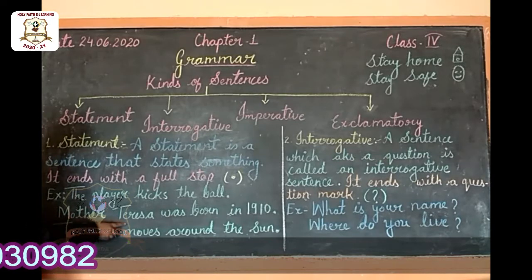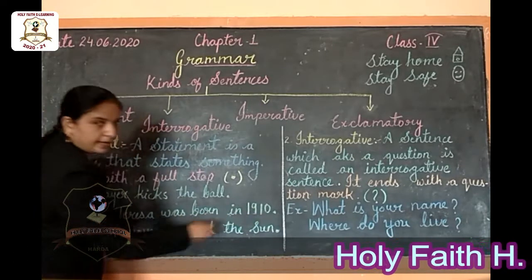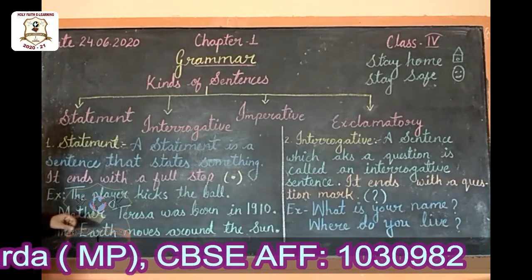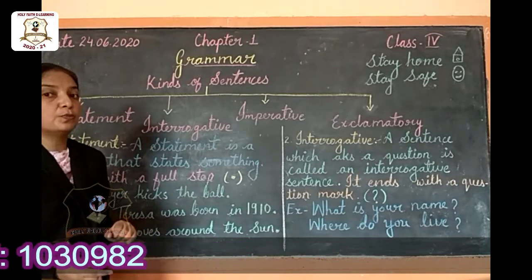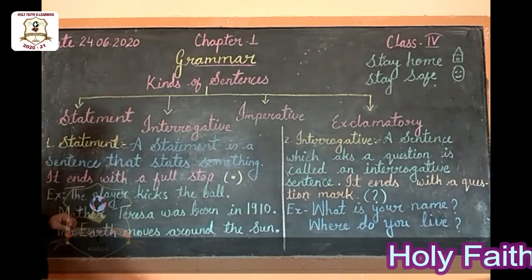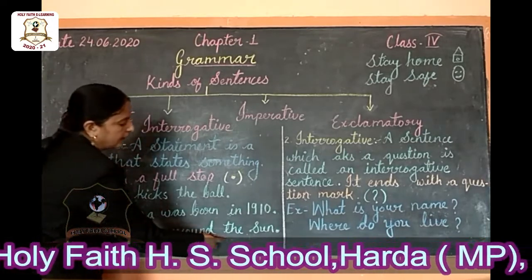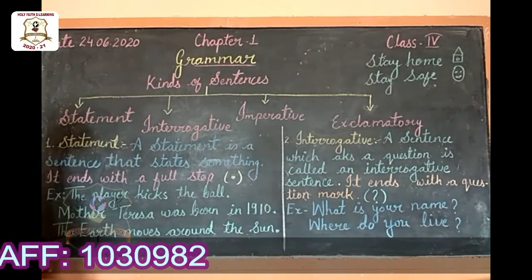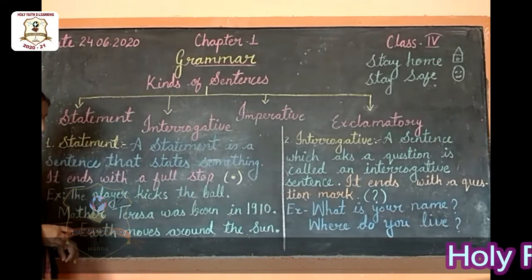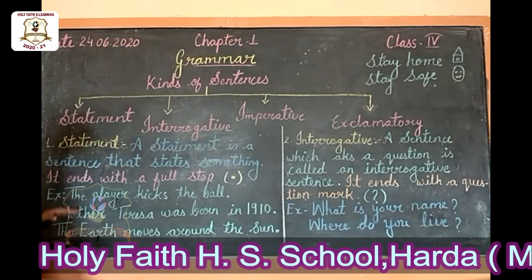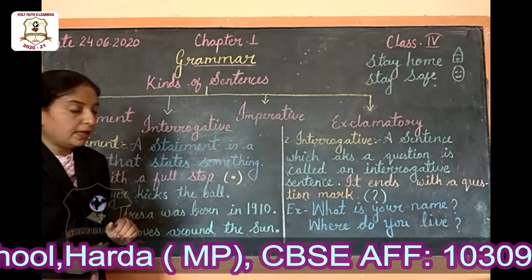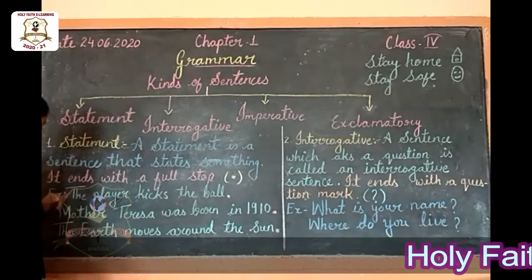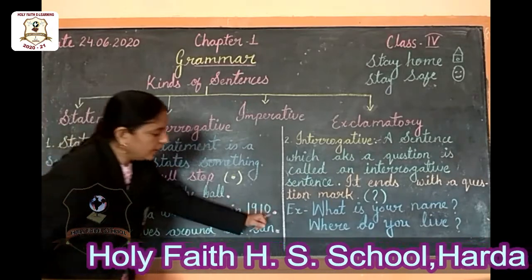Now the second example: 'Mother Teresa was born in 1910.' This sentence gives us information about Mother Teresa, that she was born in 1910. Third example: 'The earth moves around the sun.' It states the fact that the earth moves around the sun. So all these sentences give us information and tell us something, and all these sentences end with a full stop. A statement always begins with a capital letter and ends with a full stop.